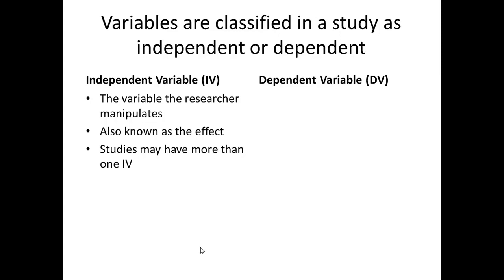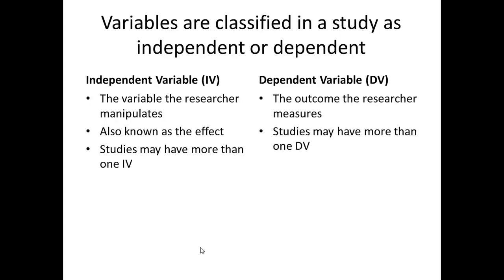Variables are classified in a study as independent or dependent. The independent variable is the one that the researcher can manipulate — also known as the effect — and some studies may have more than one. The dependent variable depends on the independent variable; it's the outcome that the researcher measures, and studies can have more than one dependent variable.